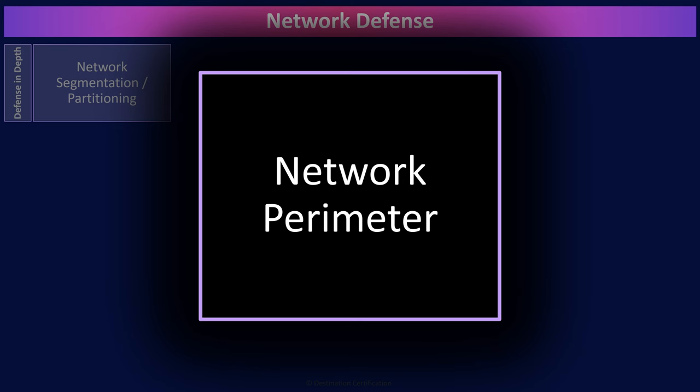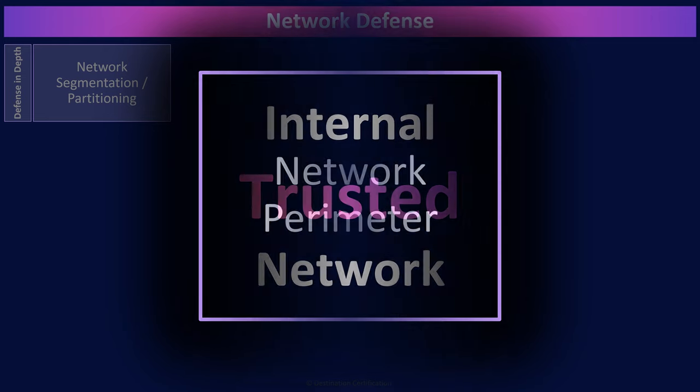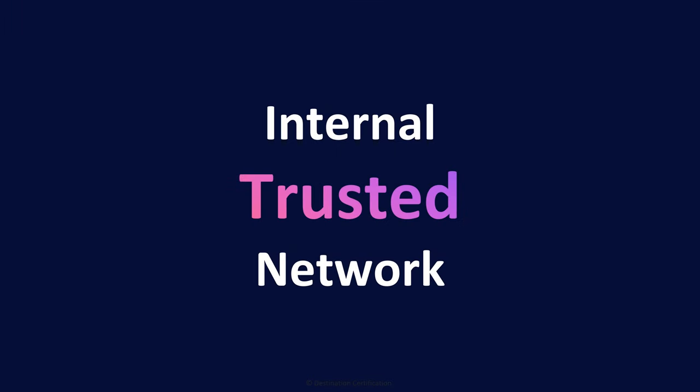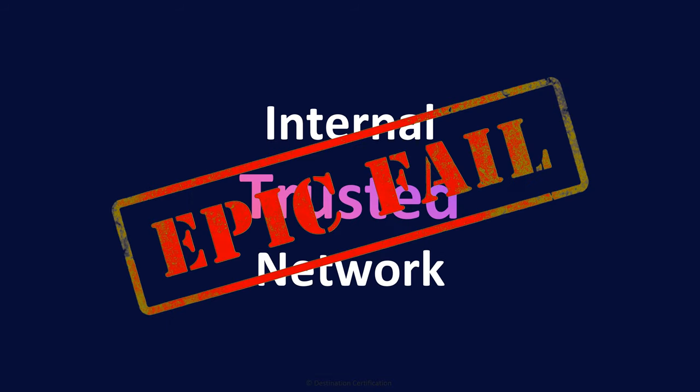The largest segmentation is going to be between an organization's internal network and the internet. You ideally want a clearly defined boundary between your internal network and the public-facing side, and then control the flow of traffic between these two segments, typically with a firewall. You should never use the concept of an internal trusted network. You must always assume that the baddies are inside your network. There is no trusted network. Zero trust.